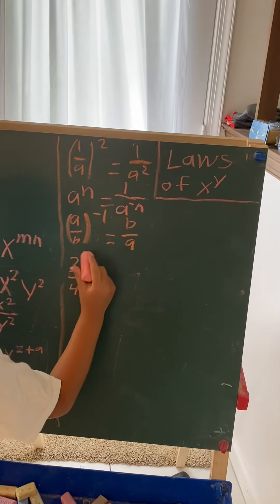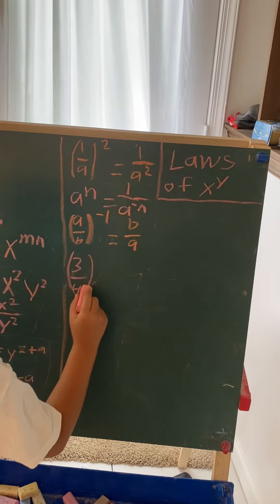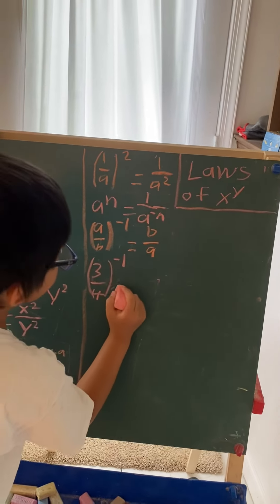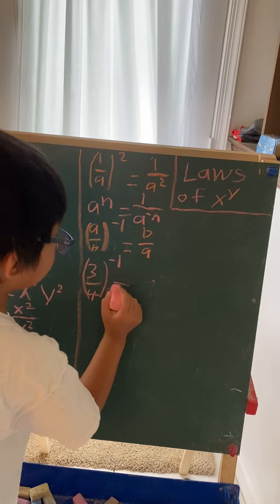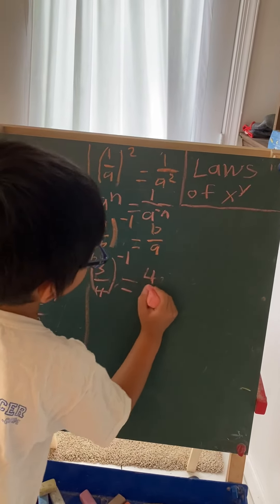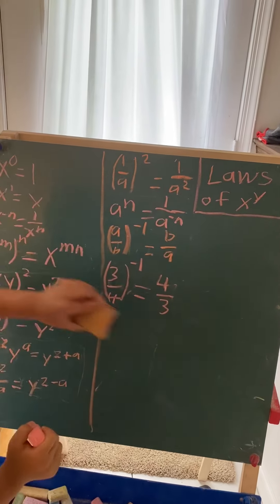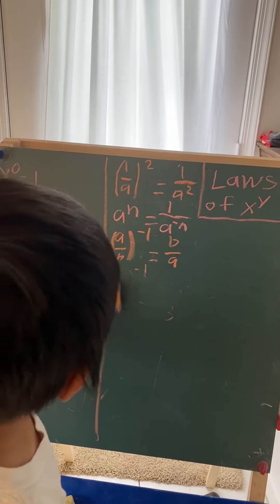For example, 3 over 4 to the negative 1 is the same as 4 over 3.